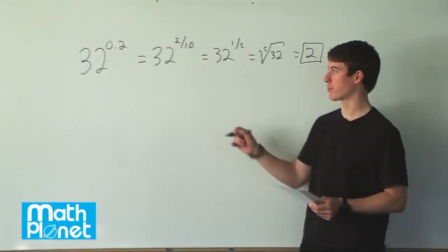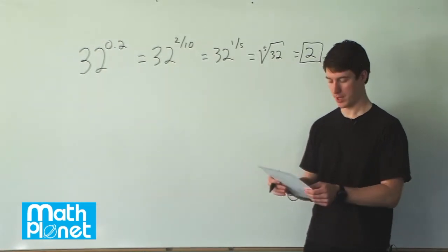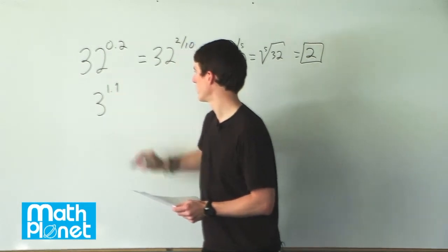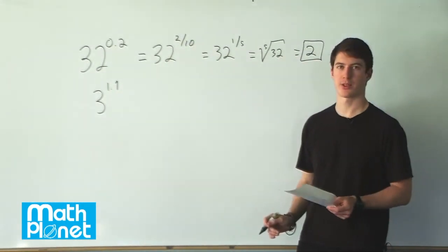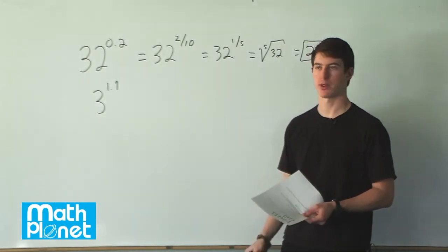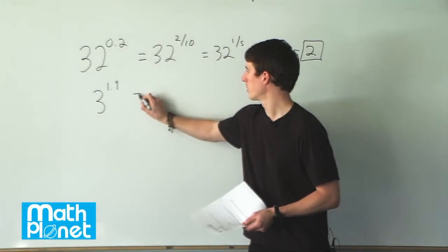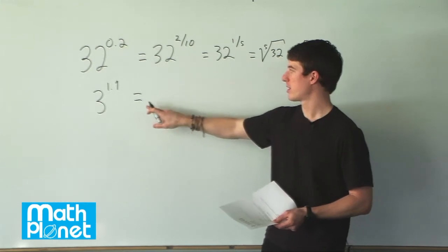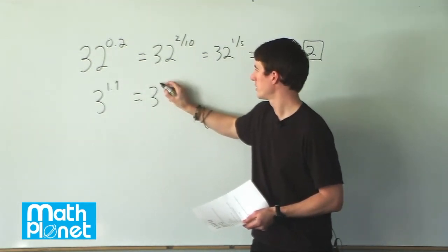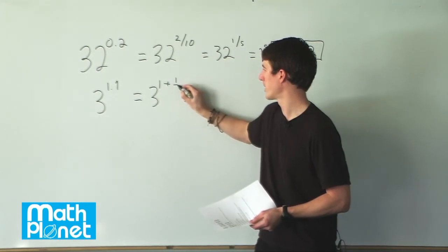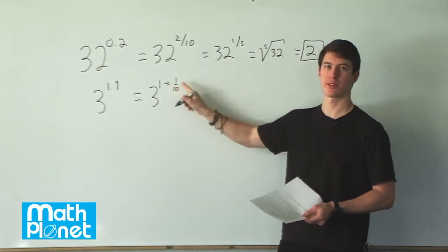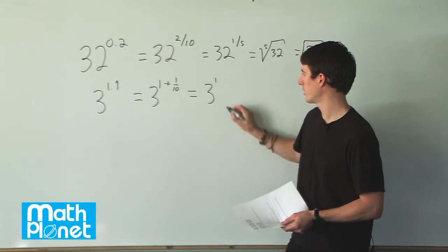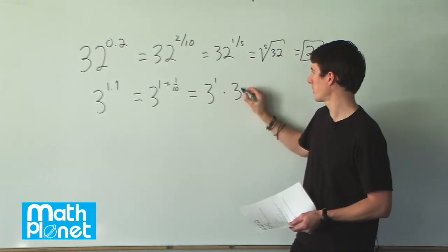Let's take a look at another example with powers or indices that we can simplify. So let's look at 3 to the power of 1.1. We can't find the answer right away, but we can change it a little. We can write this using a rule of powers as the same base of a sum — 3 to the power of 1 plus 1 tenth, or 3 to the power of 1 plus 0.1. Then we can say that this is a multiplication: 3 to the power of 1 times 3 to the power of 1 tenth.